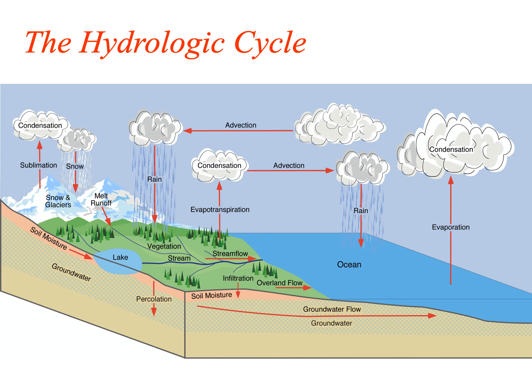This diagram is the hydrological cycle found in all introductory Earth science and physical geography books. On it, we can see some of the stores — like the ocean — and some of the processes that move water from, say, the ocean to the atmosphere through evaporation, and then back down from the atmosphere to the ocean in the form of rain.